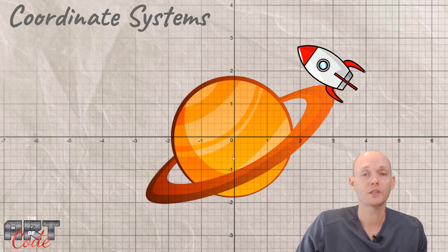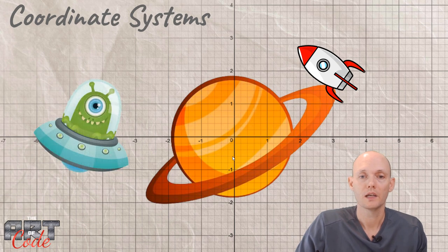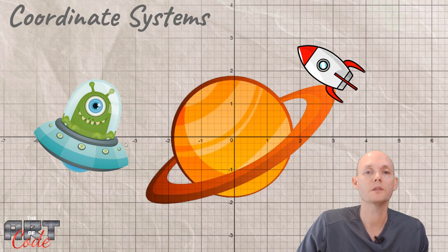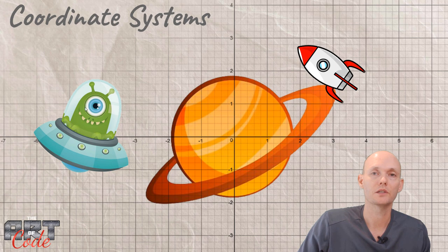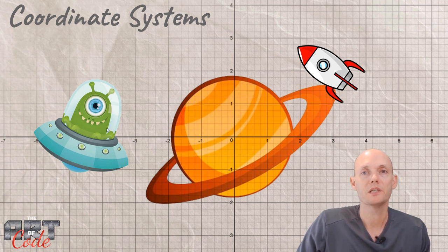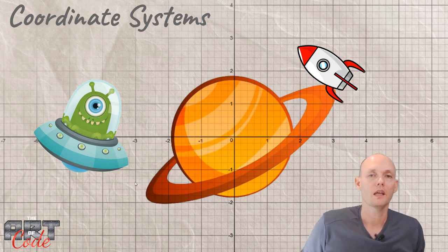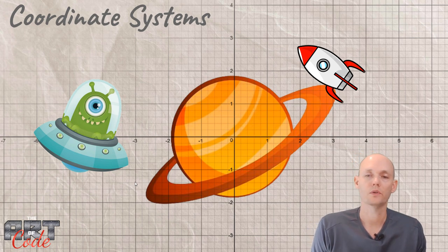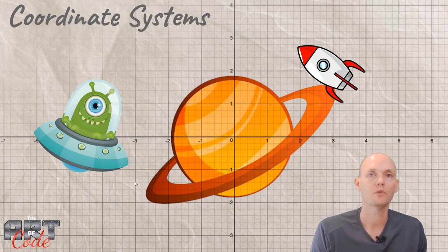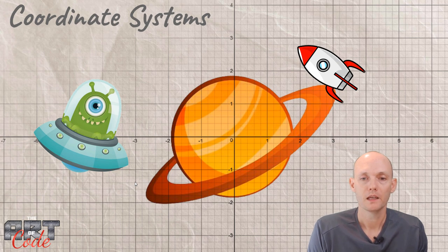Every different object could have its own coordinate system. If we have a little flying saucer, that might have its own coordinate system as well, so that the alien sitting inside has its position expressed in terms of the flying saucer's coordinate system. In computer graphics, there are lots of different coordinate systems for different objects, cameras, and different projections. Let's go through that in this video.